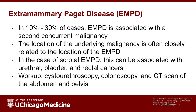In 10–30% of cases, extramammary Paget's disease is associated with a second concurrent malignancy. The location of the underlying malignancy is often related to the location of the disease. In the case of scrotal extramammary Paget's disease, this can be associated with urethral, bladder, and rectal cancers. For this reason, the workup includes cystourethroscopy, colonoscopy, and CT scan of the abdomen and pelvis.